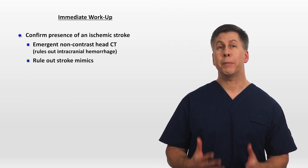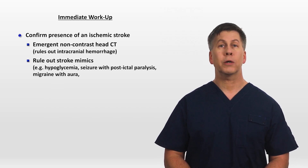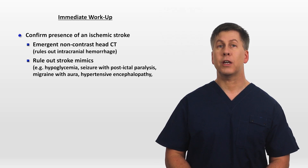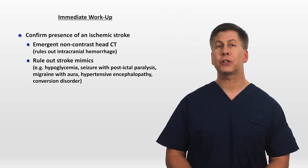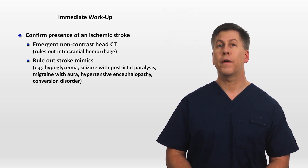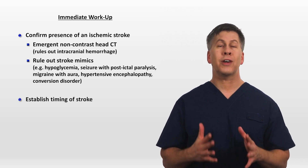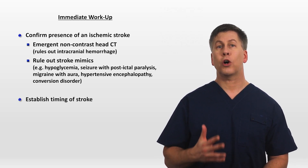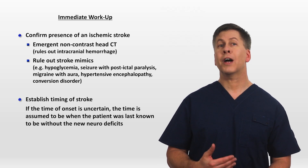You also want to rule out stroke mimics. These include hypoglycemia, seizure with post-ictal paralysis, migraine with aura, hypertensive encephalopathy, and conversion disorder. Of the stroke mimics, all but hypoglycemia can usually be sufficiently ruled out by history and exam alone, which is why a glucose level is the only blood test that's strictly required prior to TPA administration. You want to establish the timing of the stroke by the first onset of symptoms. If the time of onset is uncertain — for example, if the patient wakes up with the deficits already present — the time is assumed to be when the patient was last known to be at their baseline.